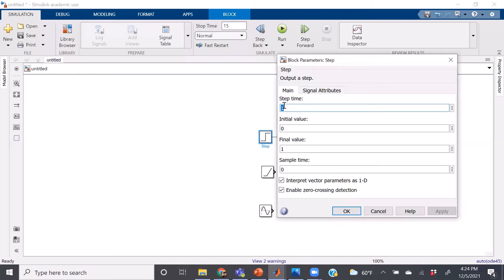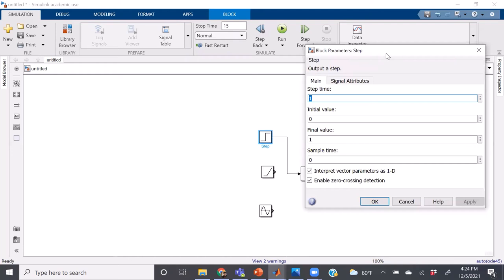Step time is just the time when the step change takes place. In the example we looked at before, this was at time equal to zero. The initial value was just the value of that response variable before the step change. In our example, this was zero.